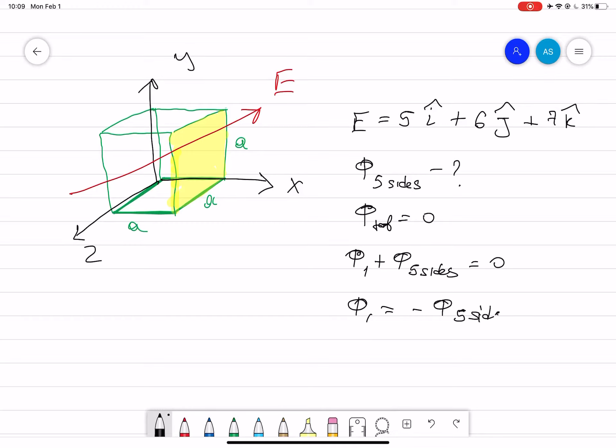Now, how can you find flux one? Flux one is the shaded side. So flux one is basically equal to E dot A.